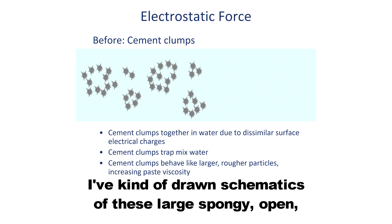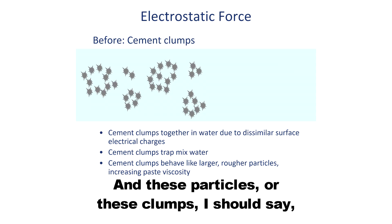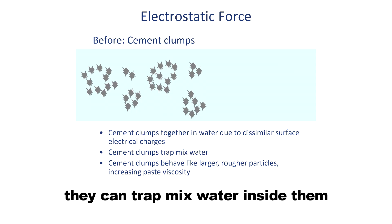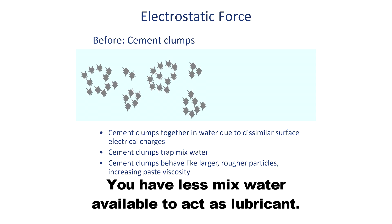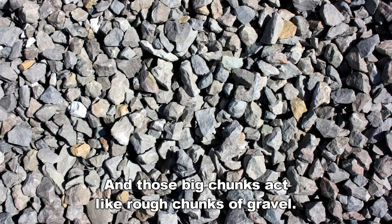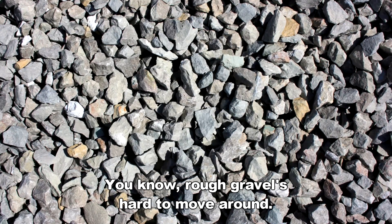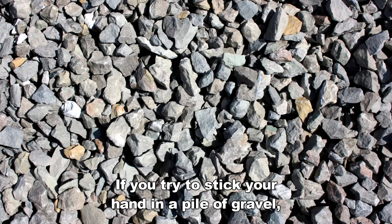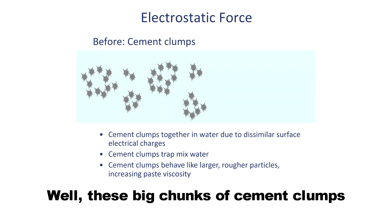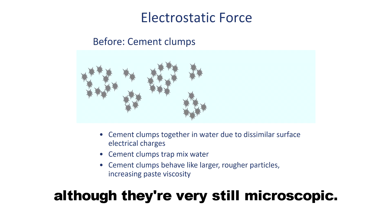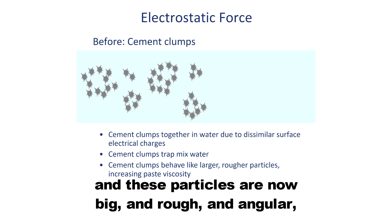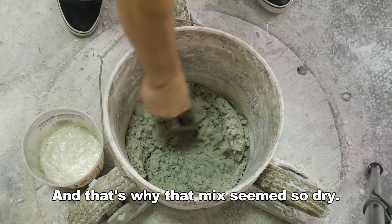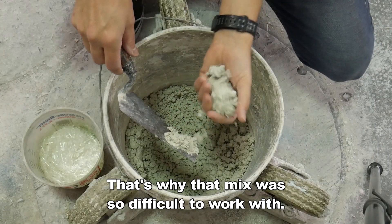On the left side of the screen, I've drawn schematics of these large, spongy, open — almost like bubbles of particles stuck together. These clumps can trap mixed water inside them. Just like if you use porous aggregate, you're actually losing mixed water — you have less mixed water available to act as lubricant. Those big chunks act like rough chunks of gravel. Rough gravel is hard to move around; if you try to stick your hand in a pile of gravel, there's a lot of friction. These big clumps of cement act like big chunks of gravel, although they're still microscopic. They don't move around each other very well. So you've lost some of your mixed water or trapped it, and these particles are now big and rough and angular — and that's why that mix seems so dry and difficult to work with.